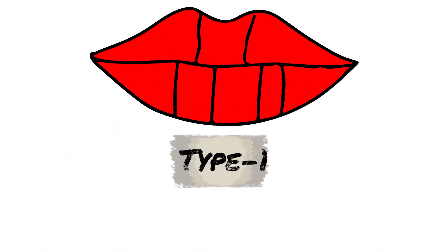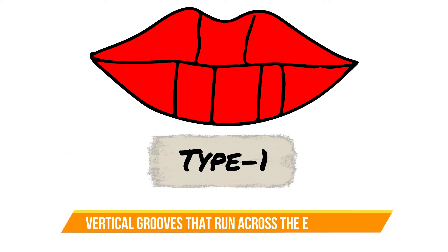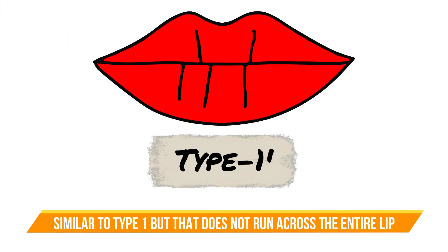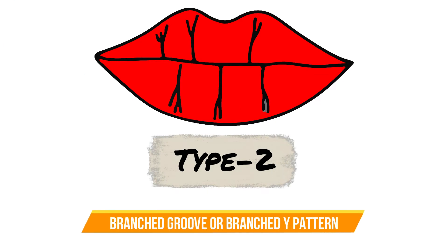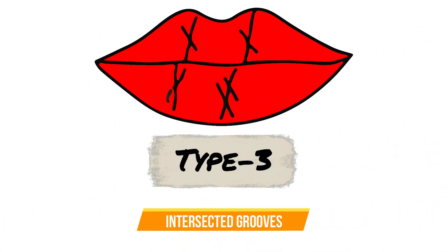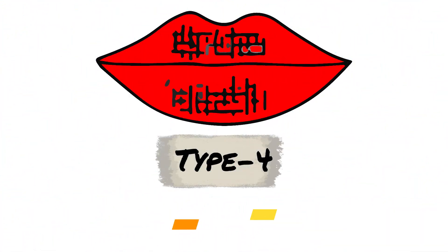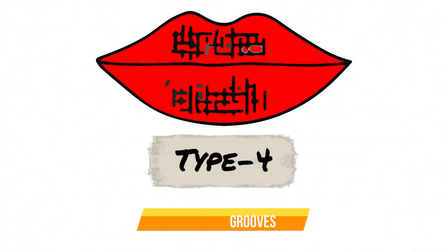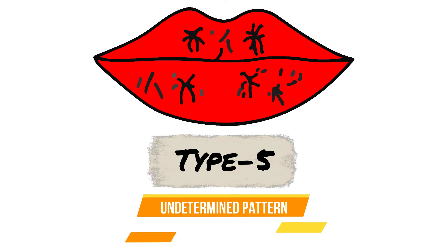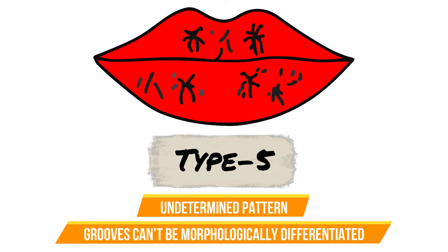Type 1 is described as clear-cut vertical grooves that run across the entire lip. Type 1 dash is similar to Type 1 but does not run across the entire lip. Type 2 is a branched groove or branched Y pattern. Type 3 is intersected grooves. Type 4 is reticular grooves. And Type 5 is undetermined pattern, where the grooves can't be morphologically differentiated.